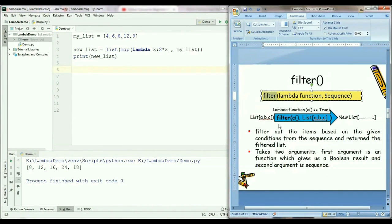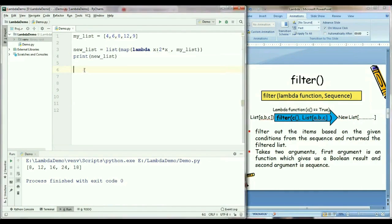So in Python, filter function filters out the items based on the given condition from the sequence and returns the filtered list. First we need to write the filter keyword which is an inbuilt function in Python and it takes two arguments.